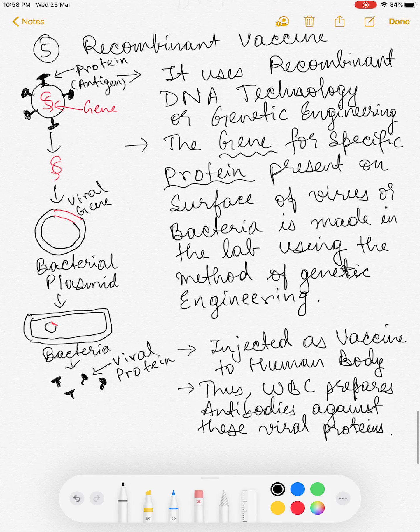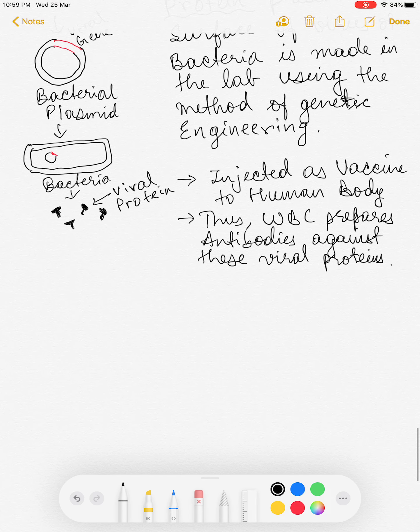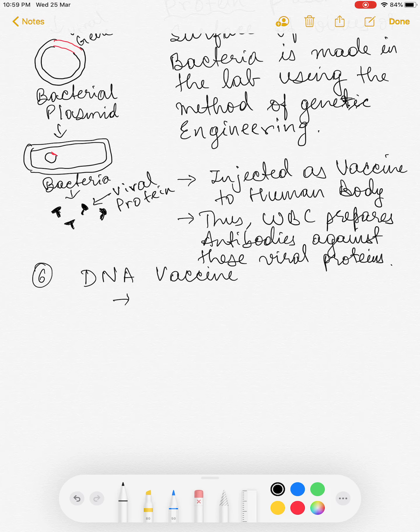Now let's understand DNA vaccines — though they sound similar to recombinant vaccines, they are not the same thing. DNA vaccines differ from recombinant vaccines in that we are NOT making the viral or bacterial protein in the lab. Instead, the body's own cell is used as a factory to create or synthesize the antigen.